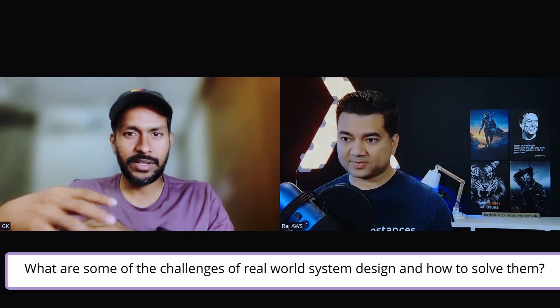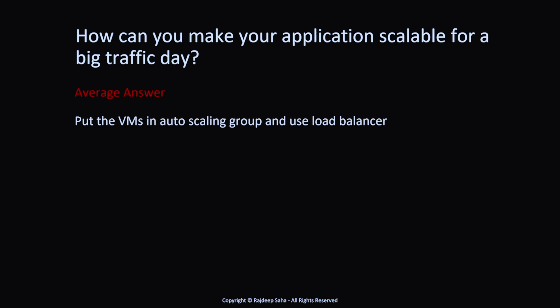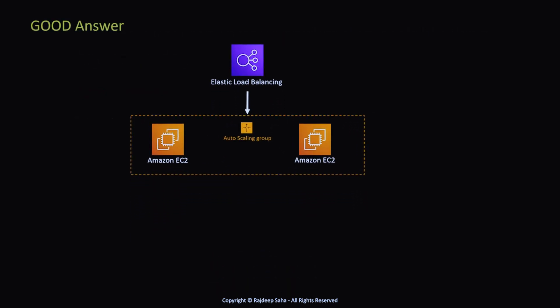What are some real-world challenges you face in system design for clients moving to AWS? A very common example is scalability. The theory says put virtual machines in an Auto Scaling Group and use a load balancer, but that's not good enough if your application traffic spikes too fast. The Application Load Balancer and EC2s in the Auto Scaling Group won't keep up with a burst of traffic, so you need to pre-warm your load balancer to accept high traffic increases.